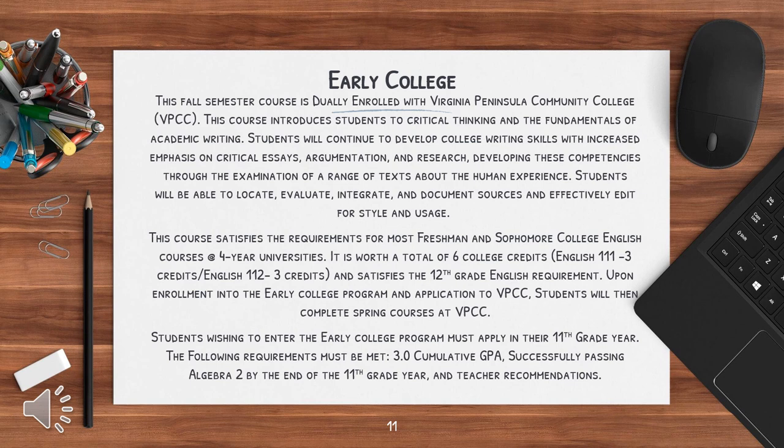English 111, three credits; English 112, three credits. This also satisfies the 12th grade English requirement. Upon enrollment into the Early College Program and application to VPCC, students will then complete spring courses at VPCC. Students wishing to enter the Early College Program must apply in their 11th grade year. The following requirements must be met: 3.0 cumulative GPA, successfully passing Algebra 2 by the end of the 11th grade year, and teacher recommendations.